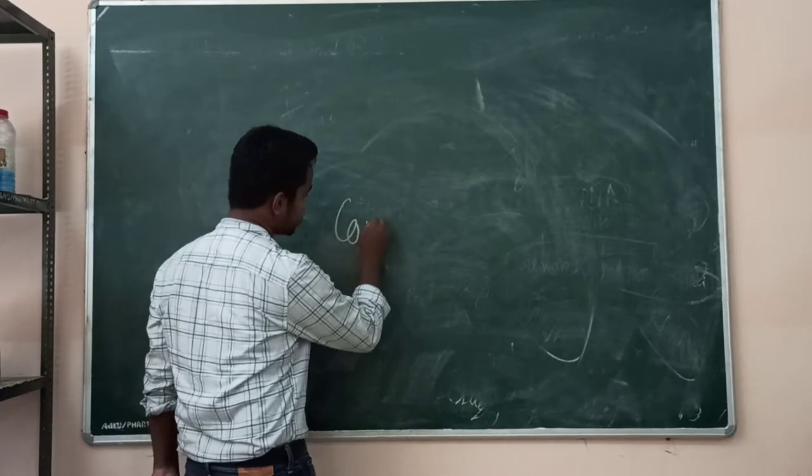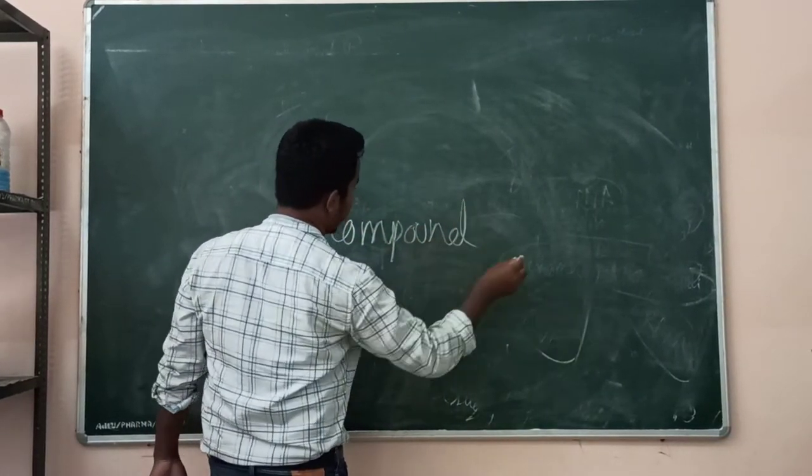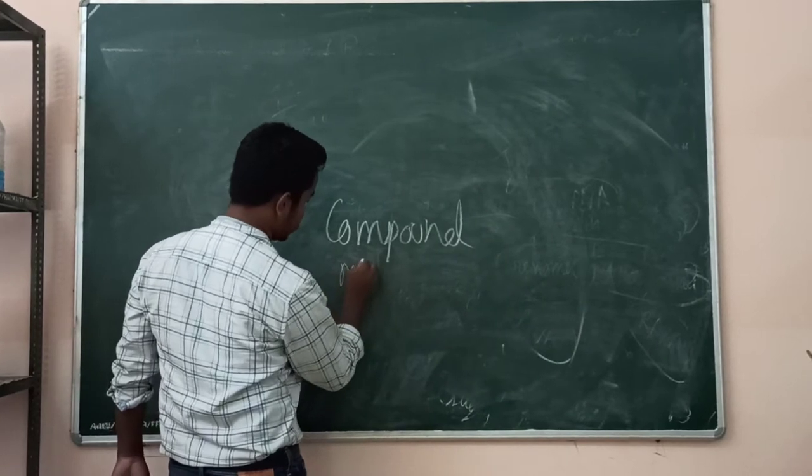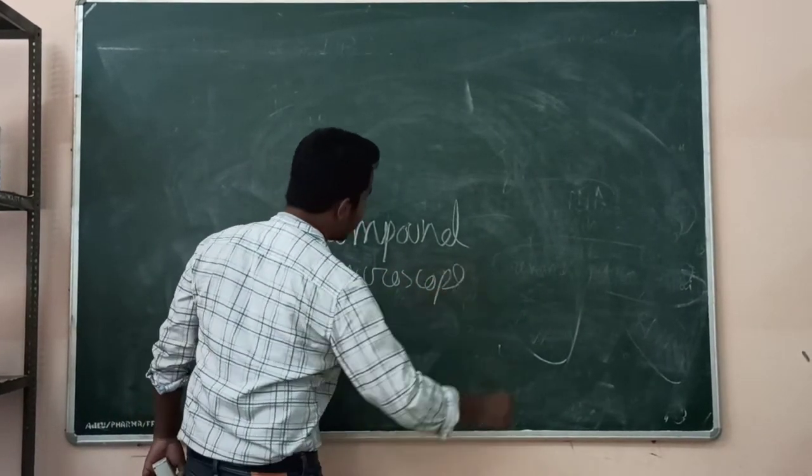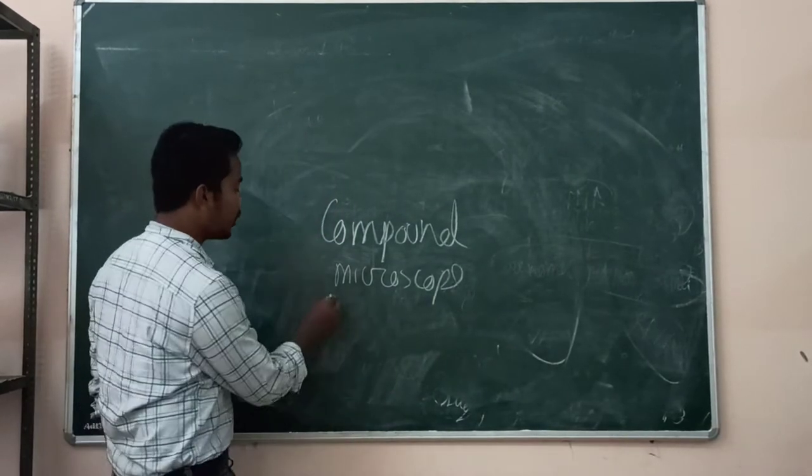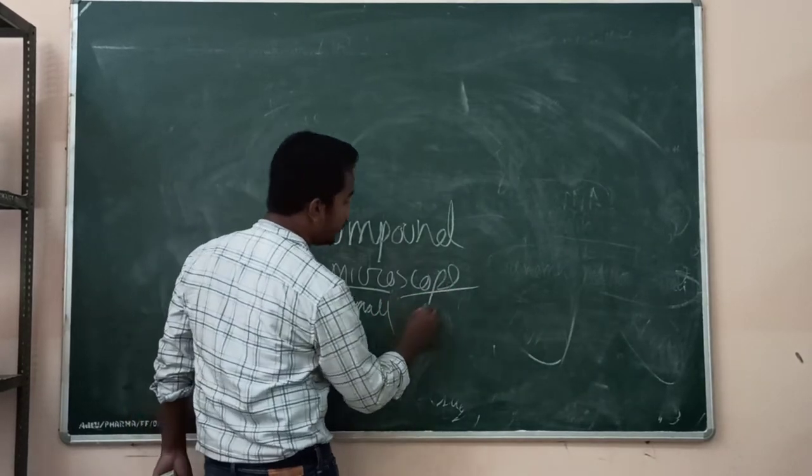Compound microscope. What is microscope? Micro means small, scope means to view.